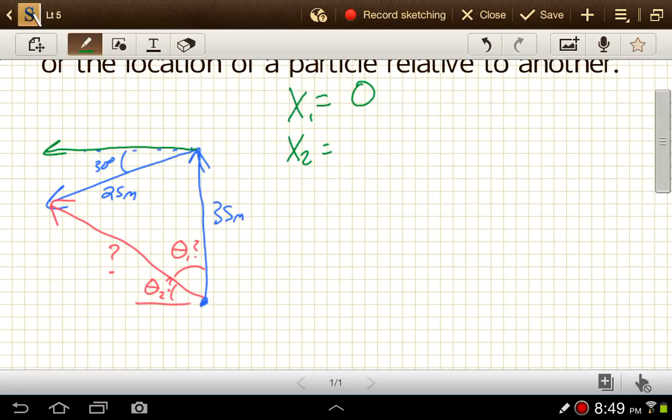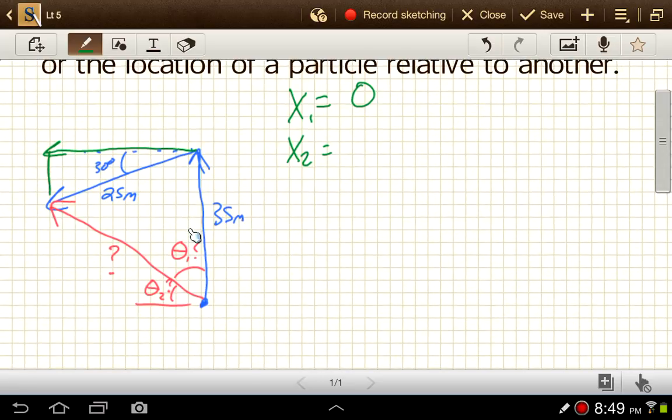And then it goes down this much. So we'll call this x2, and this is going to be y2. So x2 I would get by using cosine of the angle equals x2 over 25 meters. We just do a little trig here.